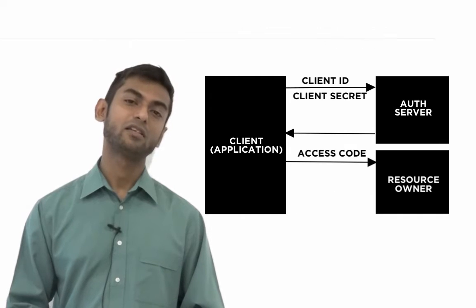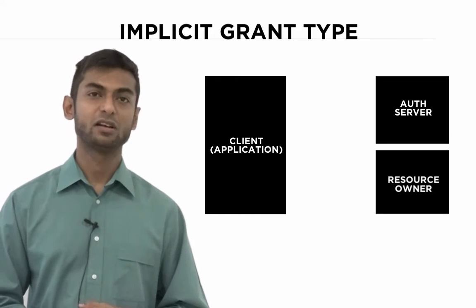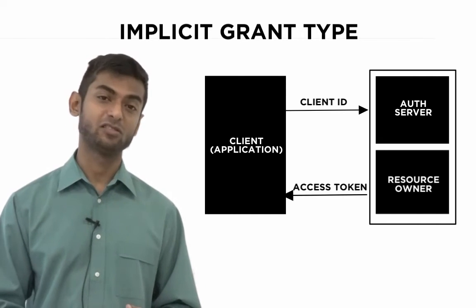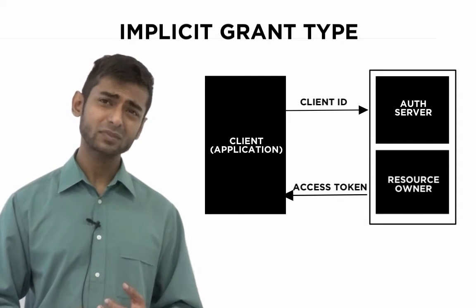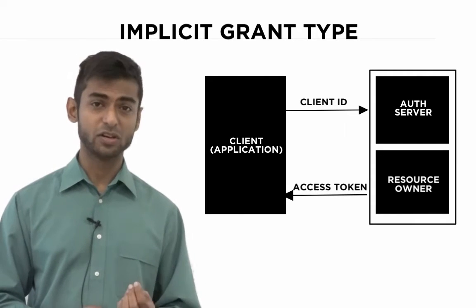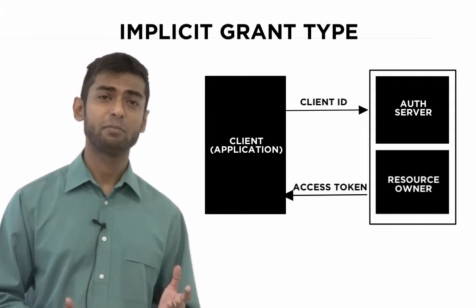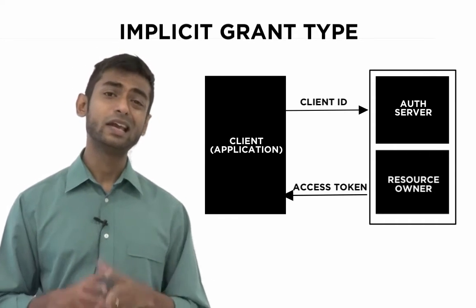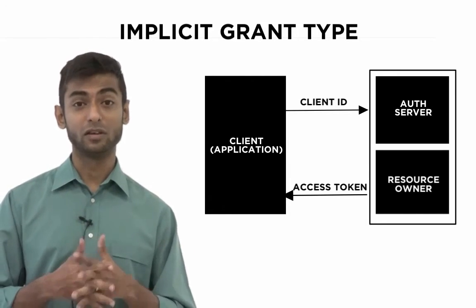The next grant type is the implicit grant type. In the implicit grant type, the application only needs to send a client ID in order to get an access token, making it more simplified than the authorization code grant type. This grant type is typically used in applications where you cannot guarantee the security of the client ID — usually client-side applications such as JavaScript applications. The resource owner also gets involved in authorizing the request.